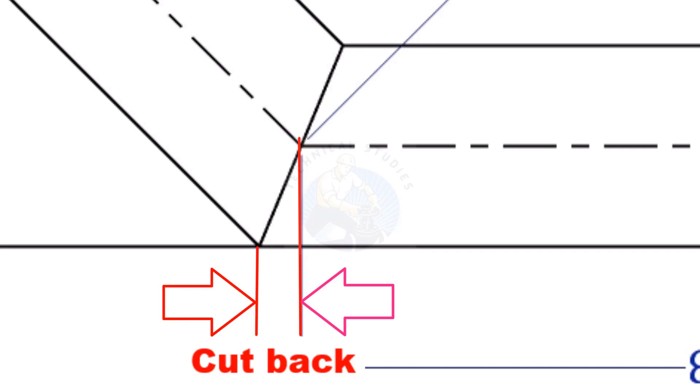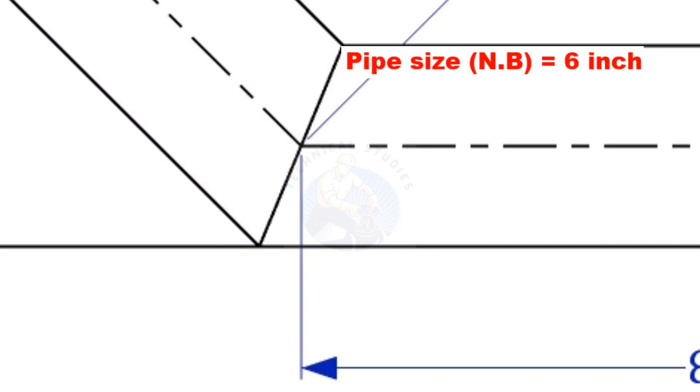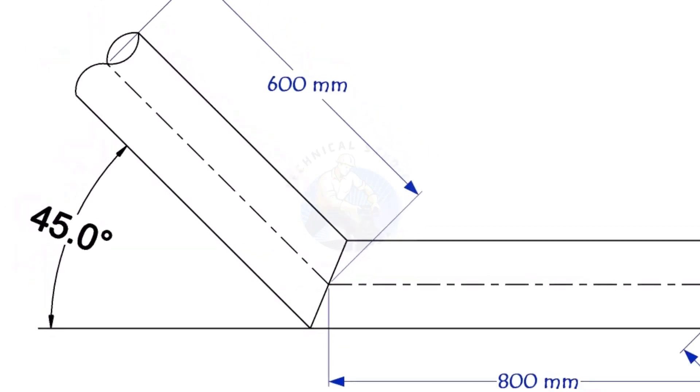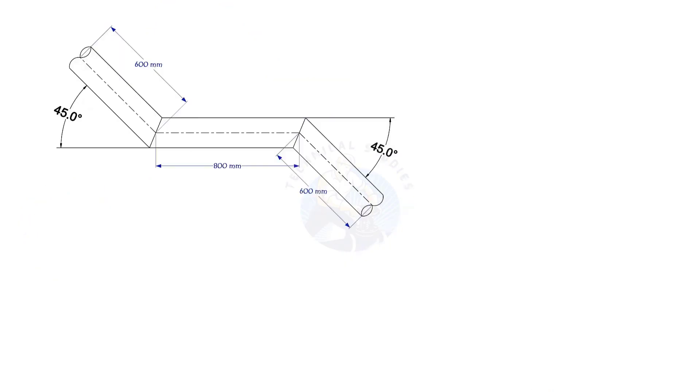To mark a miter cut, we need to know the cutback of the miter. In this offset, the nominal diameter of the pipe is 6 inch. The angle of the miter is 45 degree. This method is suitable for cutback of any degree. The outside diameter of a 6 inch pipe is 168.3 millimeters.